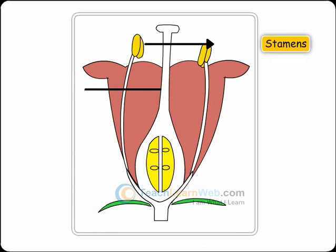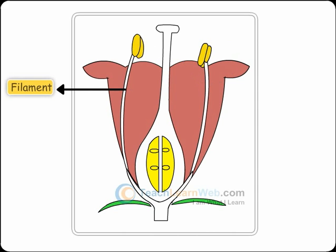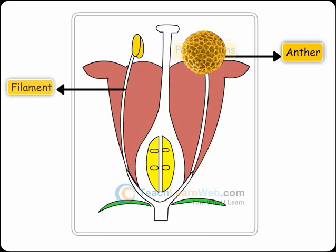Stamens and pistil form the reproductive structures of the flower. Stamen, the male reproductive structure, is made up of a filament and an anther. Anther produces pollen grains which are considered to be male gametes.